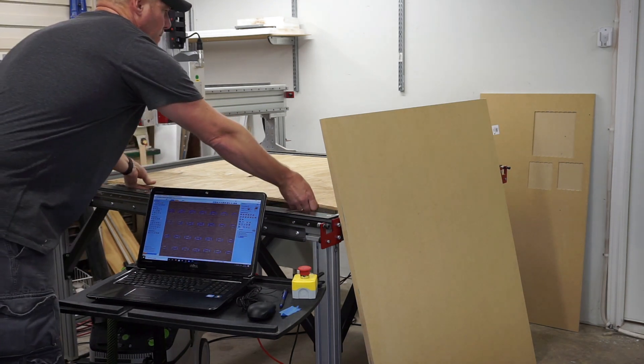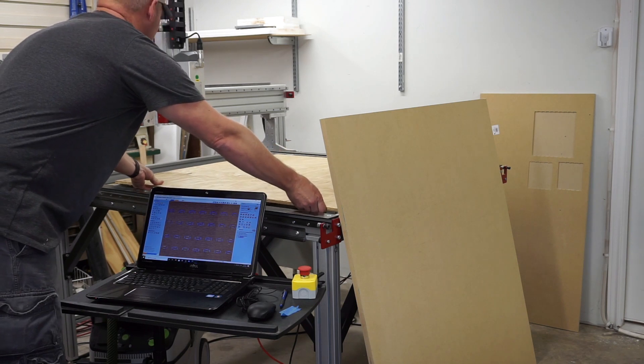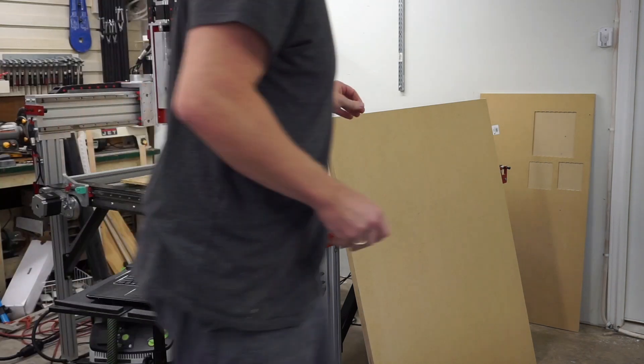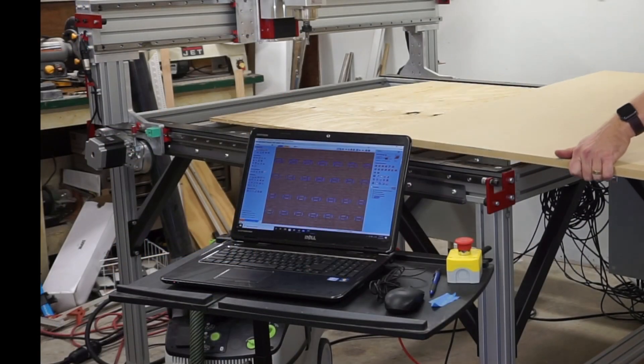Now a note, a spoil board is kind of a must-have item but you can also get away with a temporary spoil board and still use your CNC to start creating projects.